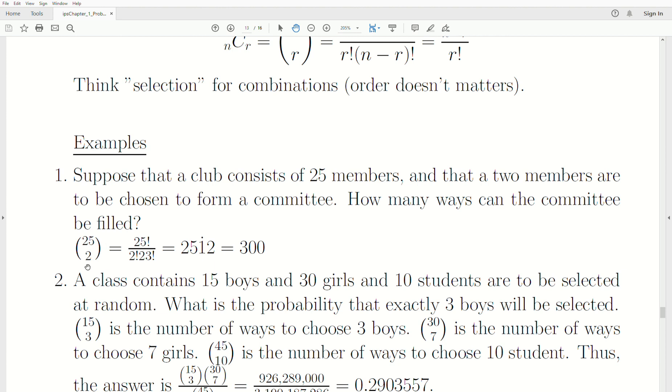So it's 25 choose 2, and then you plug them into the formula. That equals 25 times 12 equals 300 different ways.